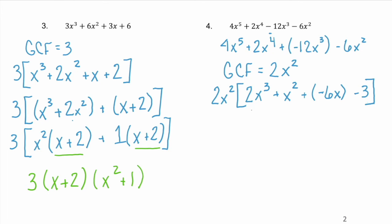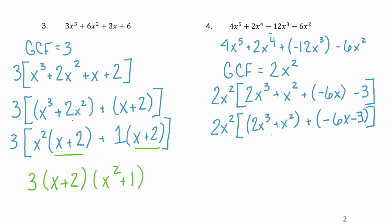Again, we use the associative property to rewrite those four terms within our bracket, bringing down the GCF of 2x squared. Our first grouping is (2x³ + x²) and our second grouping is (-6x - 3). The GCF of 2x³ + x² is x squared — we factor that out, leaving (2x + 1). For the second grouping, the GCF is negative 3 — we factor out negative 3, and we're left with (2x + 1).